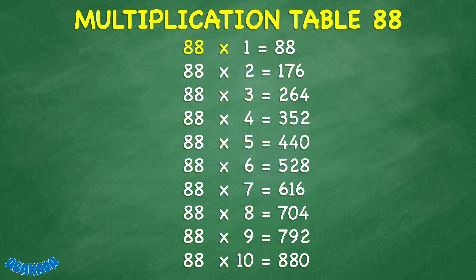88 times 1 equals 88. 88 times 2 equals 176. 88 times 3 equals 264. 88 times 4 equals 352. 88 times 5 equals 440. 88 times 6 equals 528.